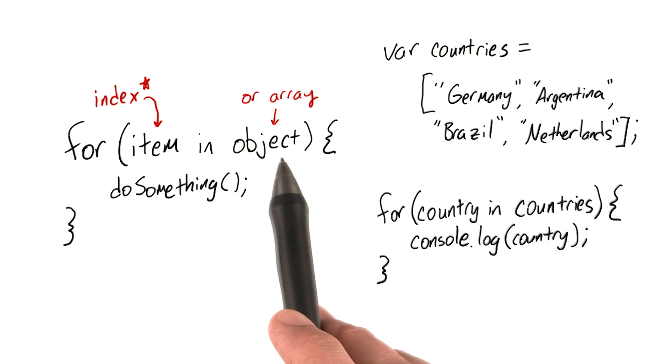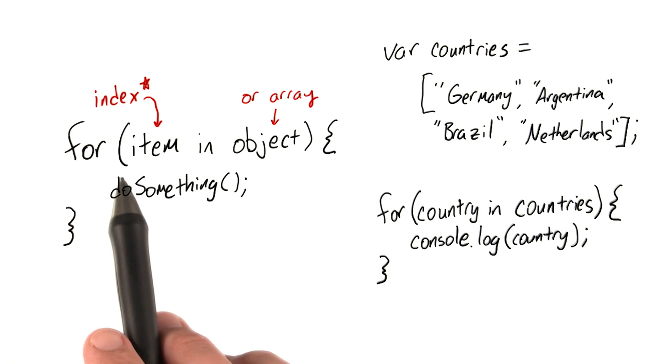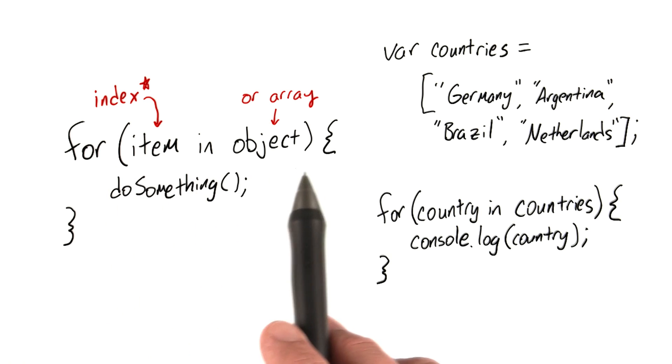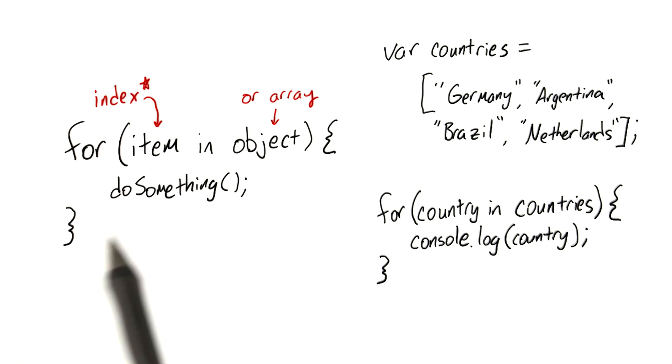For each of the items in some object, we want to do something. Just like before, we put the conditions for a for loop inside parentheses and the statements we want to execute inside curly braces.